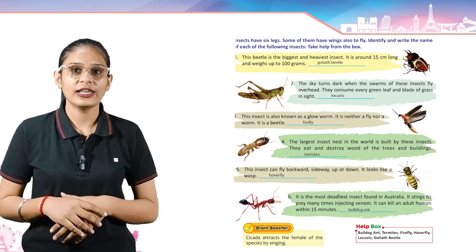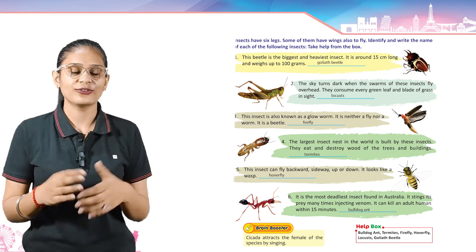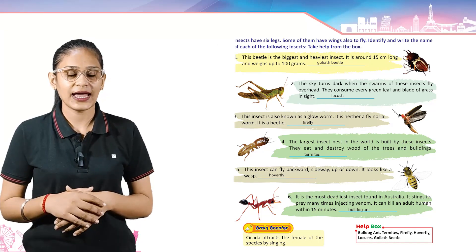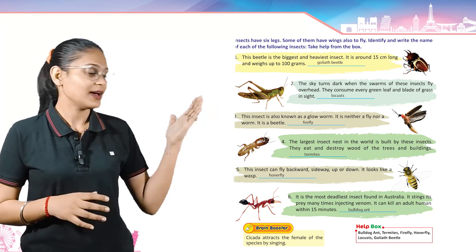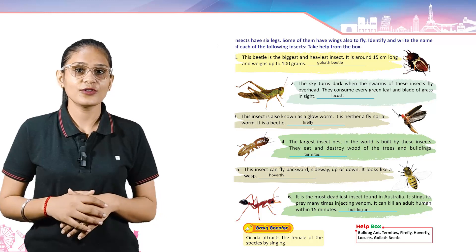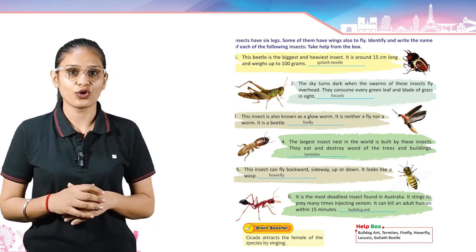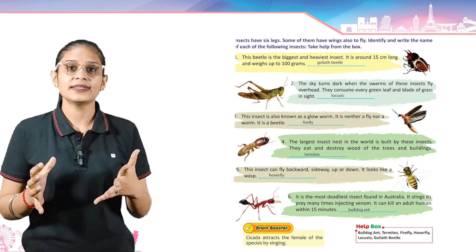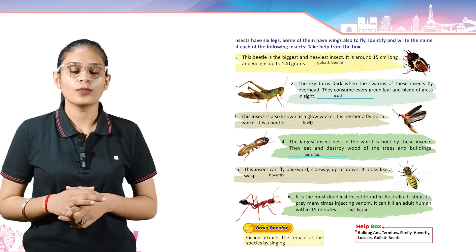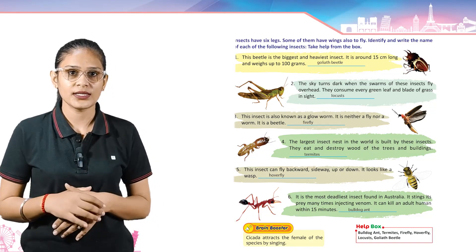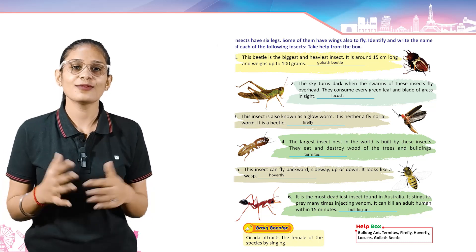Come to the next. The sky turns dark when the swarms of these insects fly overhead. They consume every green leaf and blade of grass in sight. Its answer is Locust.